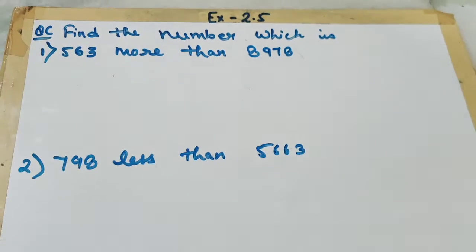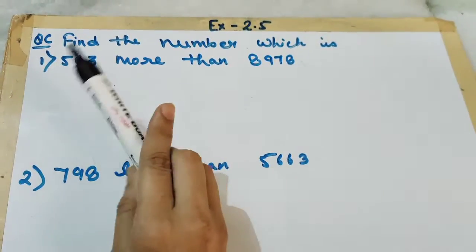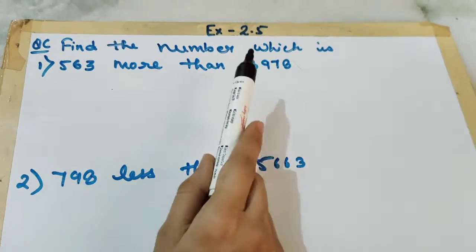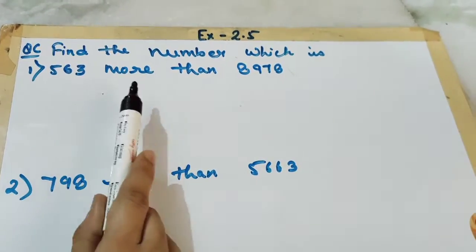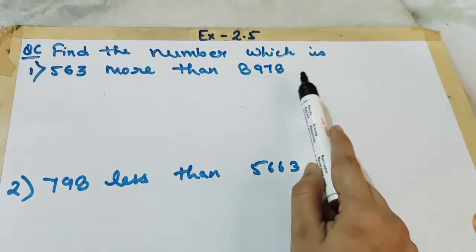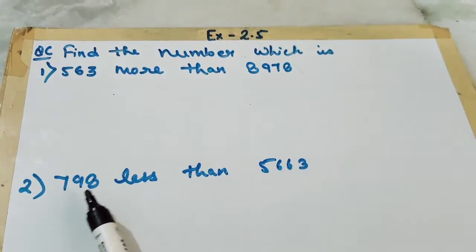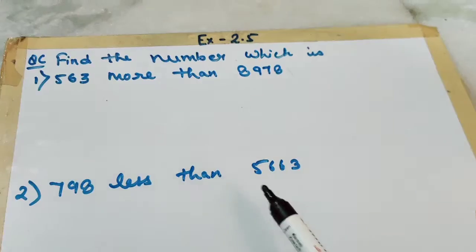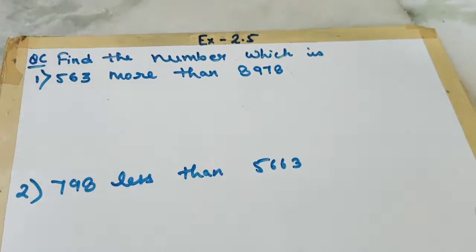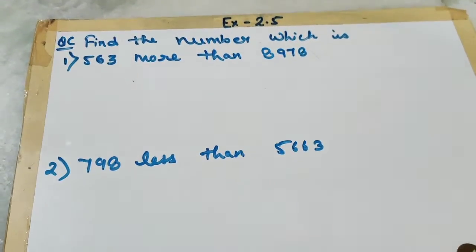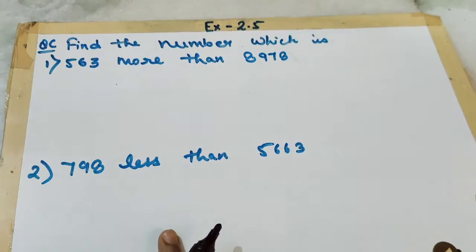In this video you will learn question number C: Find the number which is 563 more than 8,978 and 798 less than 5,663. Today you are going to learn more than and less than.